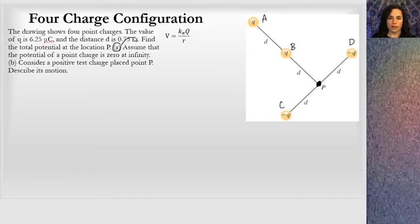Find the total potential at the location P. Assume that the potential of the point charge is 0 at infinity. So we can just use this equation as it is. R will be the distance away from the charge that we're looking at.